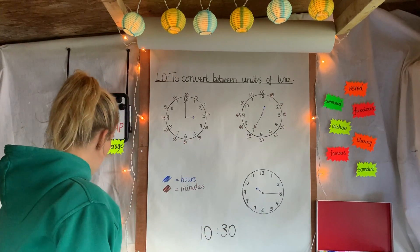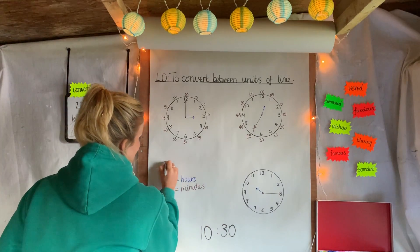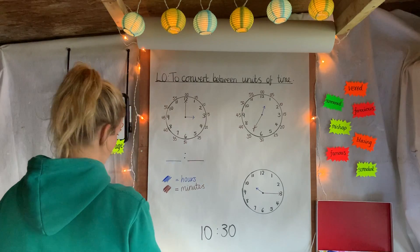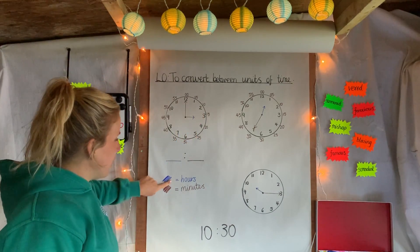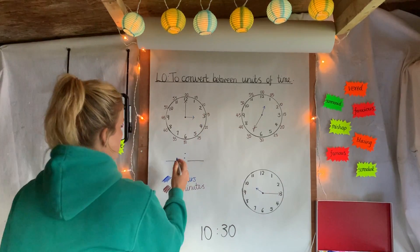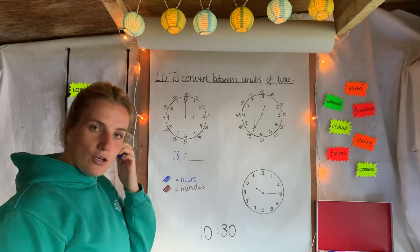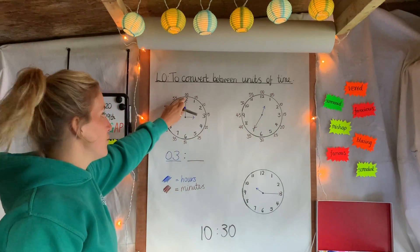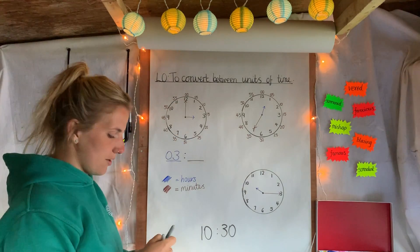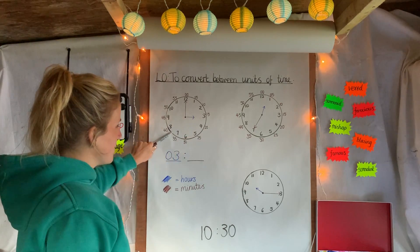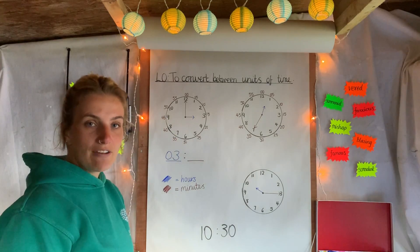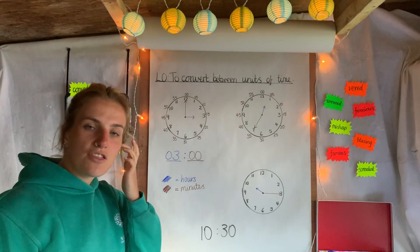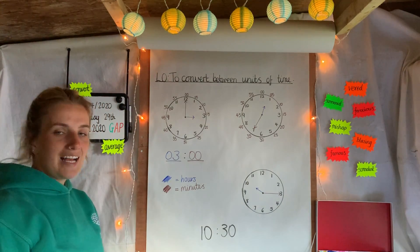When converting to digital time, the hours come first — two numbers for hours — then dot dot, then the minutes. The blue hand, which shows hours, is pointing to 3, so we write '03'. Once we get to 10, 11, and 12 we wouldn't need the leading zero because it's already two digits. The brown minute hand is pointing to zero, so it's o'clock — 03:00.